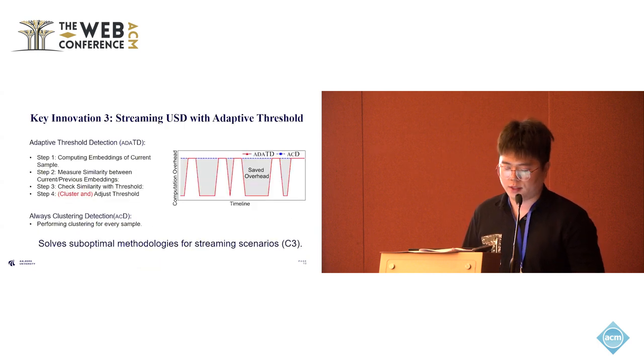Finally, we propose adaptive threshold detection for the streaming scenario. This involves computing the embedding of the current sample and then measuring the similarity between the current and previous embeddings. Then we check the similarity between the current and previous embedding against the threshold. If the similarity is high, we do not conduct clustering. But if the similarity is low, we will do the clustering and then adjust the threshold. This dynamic approach ensures efficient clustering operation in streaming USD.